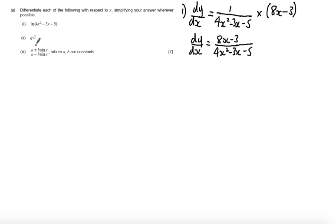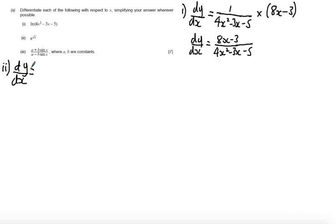Part 2 wants us to differentiate e to the square root of x. Again, we've got an example of a function inside a function. So I'm going to differentiate the outside function first of all — differentiating e to the root of x just gives me e to the root of x.